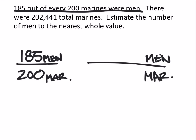Now in this other fraction we don't know how many men, but it did tell us how many marines total there were: 202,441. So this as it turns out should be an equivalent fraction. It's just been scaled up so that instead of 200 marines we're comparing men to 202,441 marines.